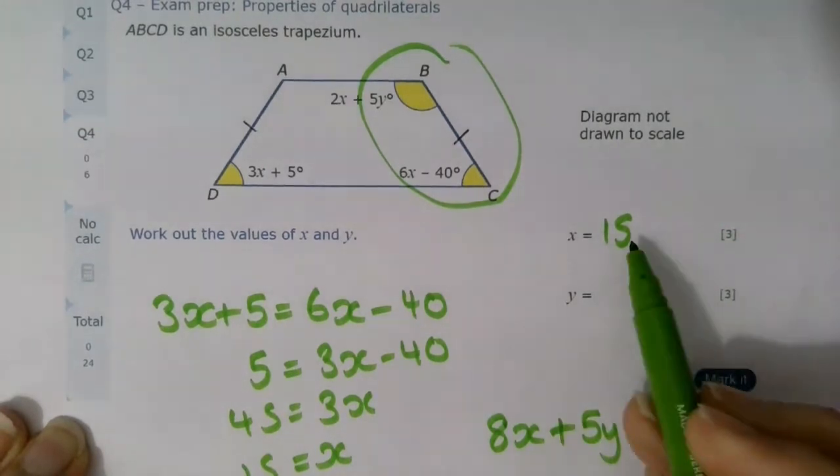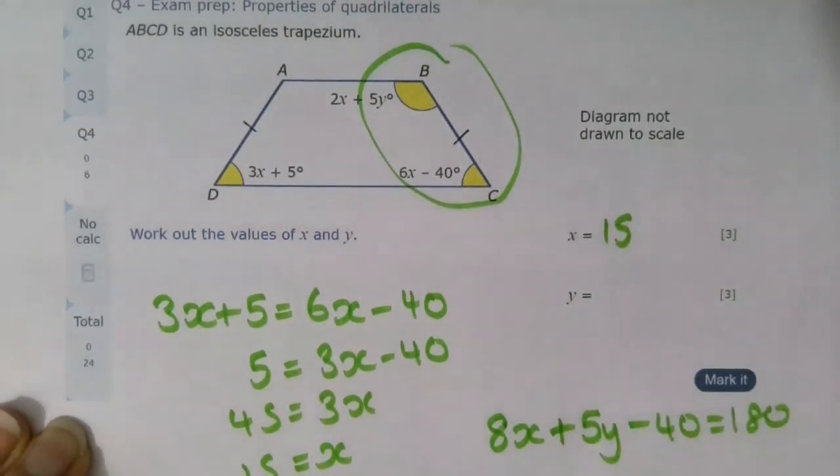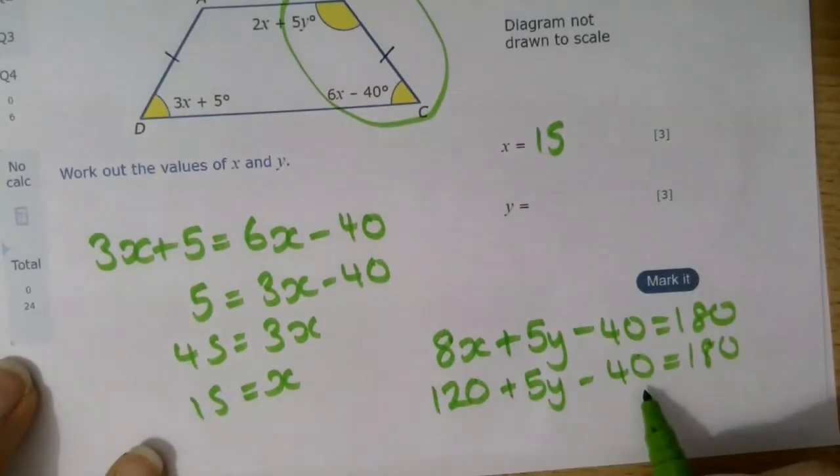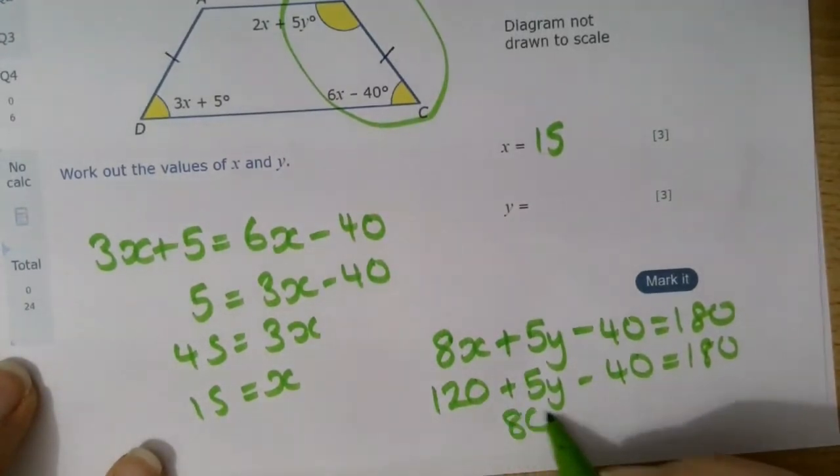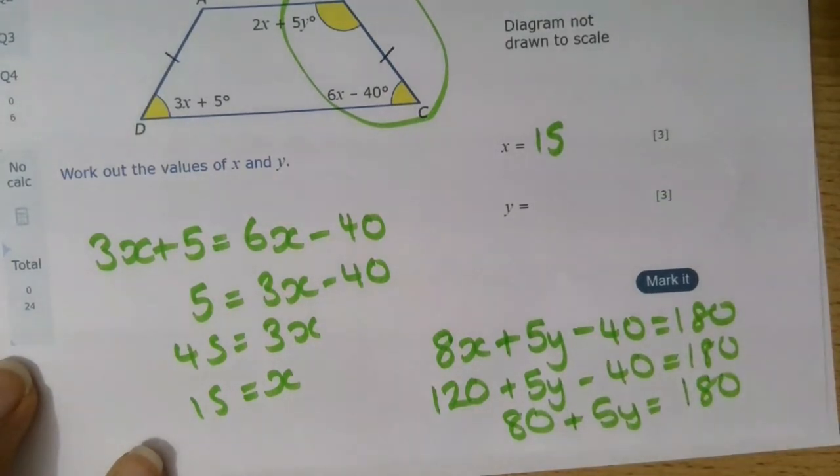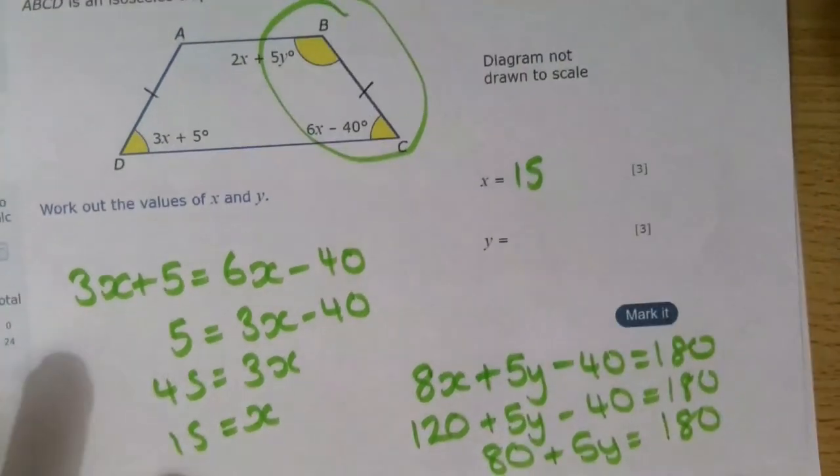I know that x is 15, so 8x must be 15 times 8, which is 120. 120 take away 40. Since 5y is 100, then y would be 20 in this case.